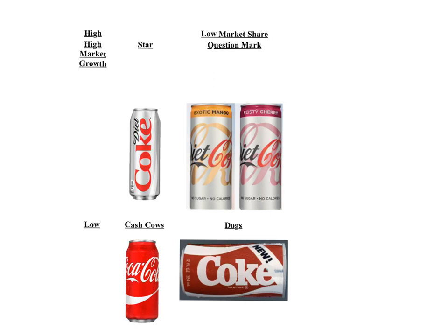Apple would also be a good Boston Matrix example. For a Dog, you'd look at the iPod — they're going to stop producing it because it's been out-competed by its own product portfolio, specifically the iPhone. For a Cash Cow, you could probably say that's the Mac, because it's still generating sales with high market share, but the growth is very low. The Star is still probably the iPhone, and possibly the iPad. The Question Mark you could look at in terms of the iWatch — it's still got quite a lot of development to do, and they're still unsure about how well it will perform compared to other Apple products.